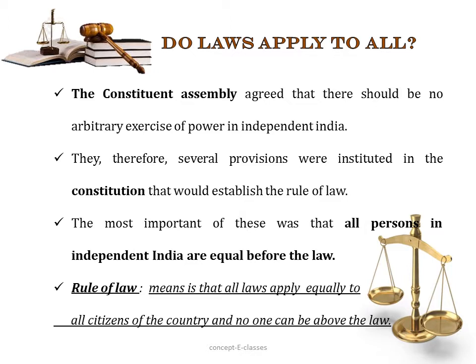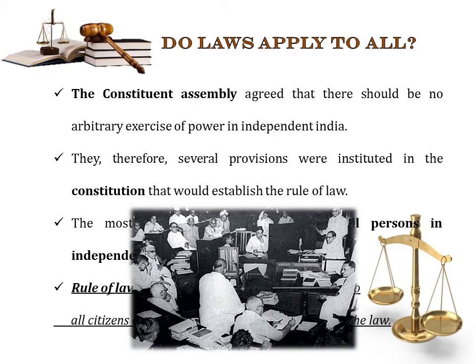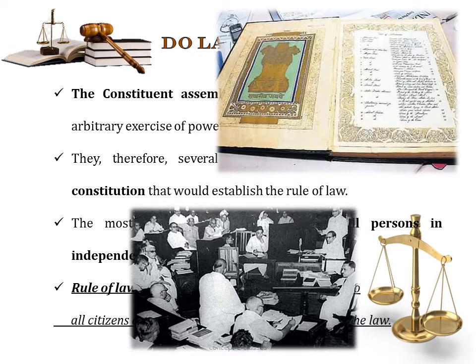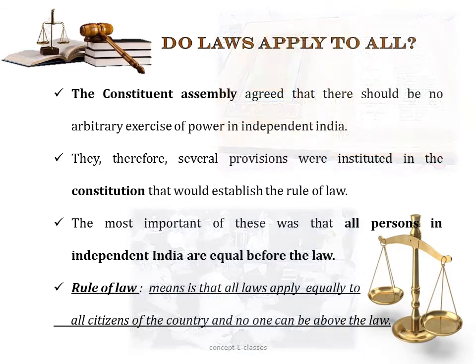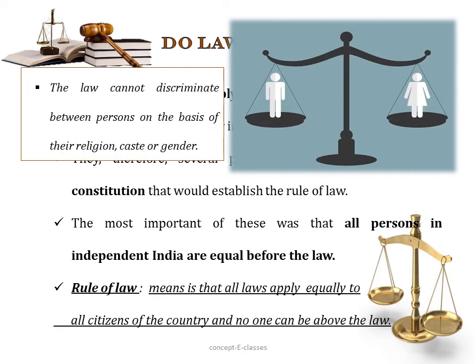So the first topic is, do laws apply to all? Are the laws same for everyone? So before independence, the Constituent Assembly agreed that there should be no arbitrary exercise of power in independent India. Now what do you mean by this arbitrary exercise of power? It means a group of people, like the British, they made rules based on their own interests rather than following justice. So such type of power is called as arbitrary power. The Constituent Assembly made sure that no such power should be in independent India.